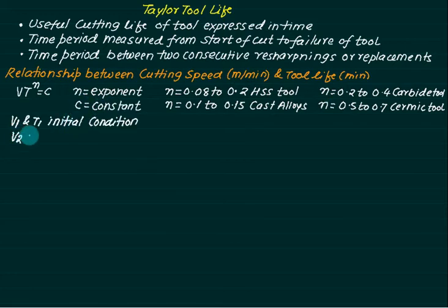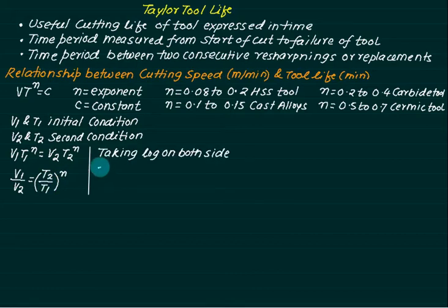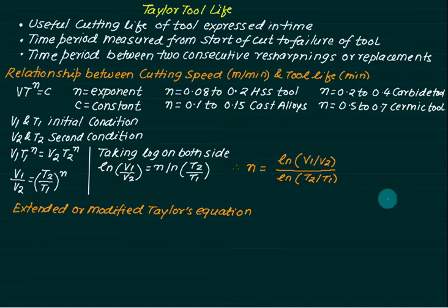Where v1 and t1 are the initial conditions and v2 and t2 are the final conditions, we can apply: v1 * t1^n = v2 * t2^n. From this we can rearrange to find the exponent n. Taking the log on both sides gives: ln(v1/v2) = n * ln(t2/t1), so n = ln(v1/v2) / ln(t2/t1). Follow this procedure for all numericals.